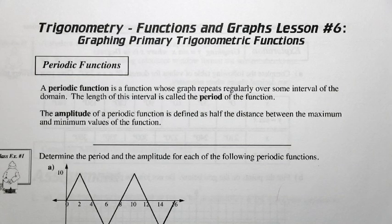We are talking about trigonometry functions and graphs, lesson number 6, and we're graphing primary trig functions. We first should talk about periodic functions. A periodic function is a function whose graph repeats regularly over some interval of the domain. So this interval could be 2 pi or 360 degrees. The length of this interval is called the period of the function.